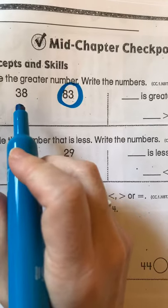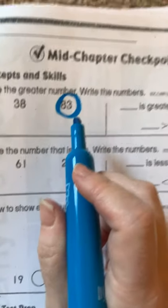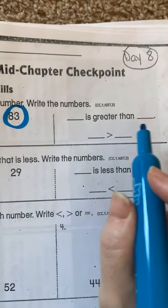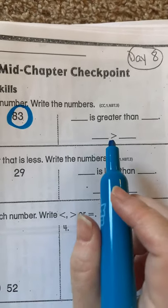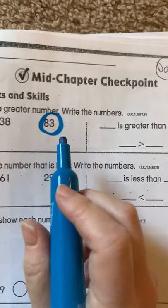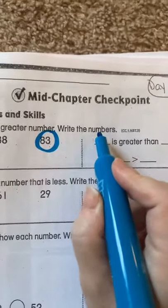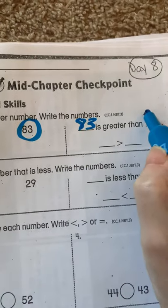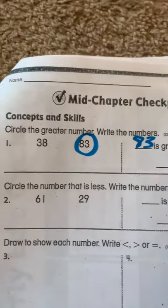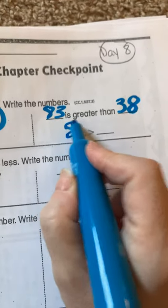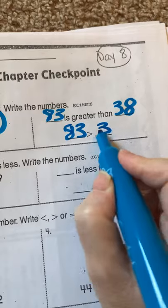So it says 38, 83. Now we come over here. Blank is greater than blank. So let's look at our numbers. We circled 83. So 83 is greater than 38. That's the numbers. Again, we do the same thing here. 83, 38.